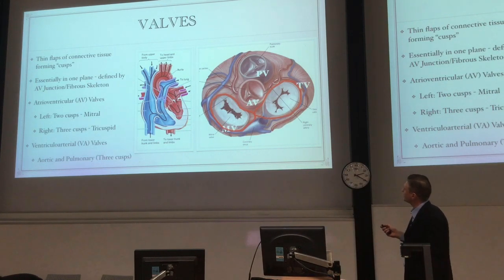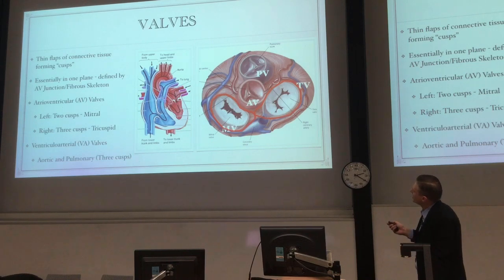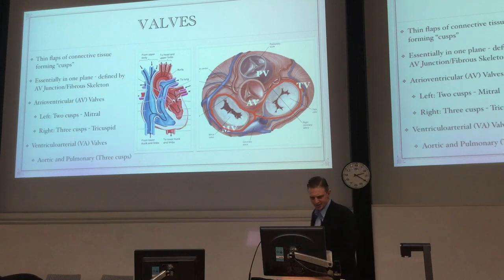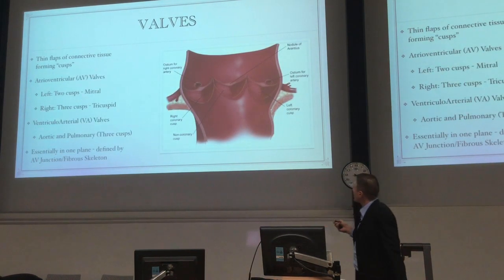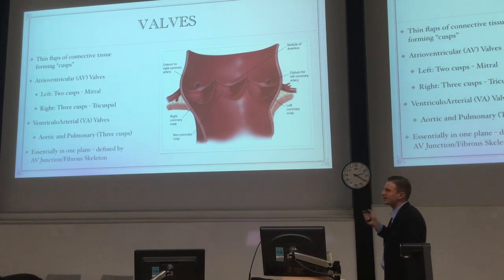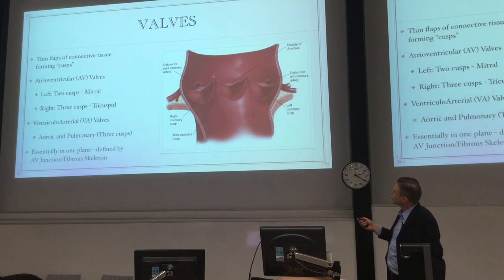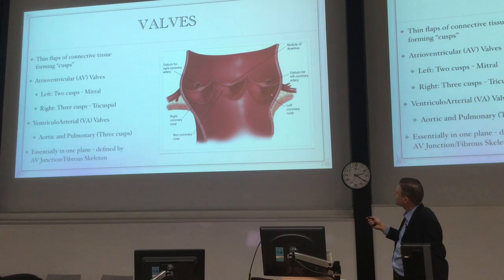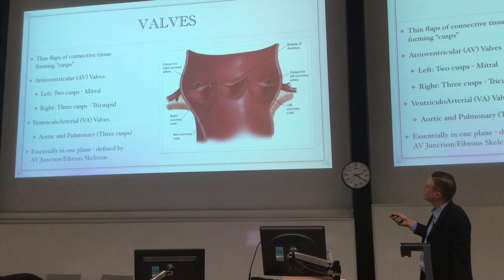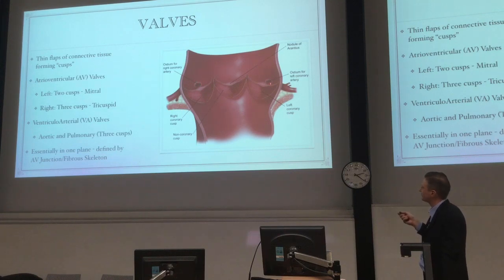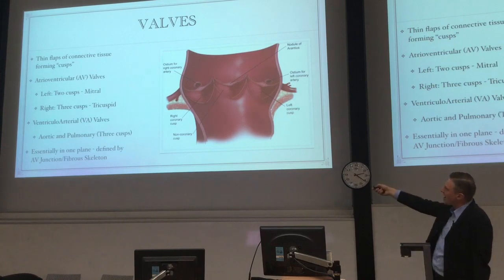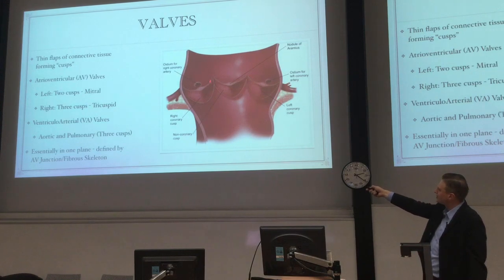The pulmonary valve has left, right, and anterior cusps. The aortic valve — the semilunar valve — also has three cusps, but you never call this a tricuspid valve, to avoid confusion with the tricuspid valve of the right atrium. You can see the dilatations above, giving the valve a crown shape. In these little sinuses — called the sinuses of Valsalva — you have the ostia of your coronary arteries. So there's a right coronary cusp, a left coronary cusp, and a non-coronary cusp — and that's how you name them.